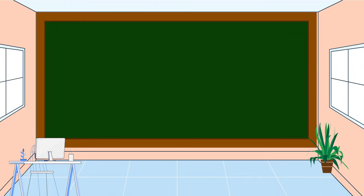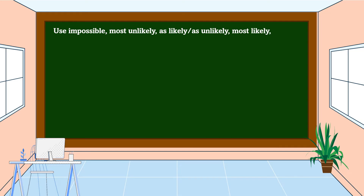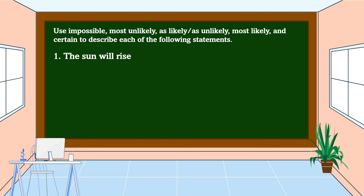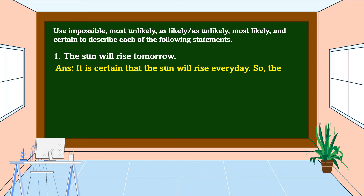Now let's apply what we have learned. Use impossible, most unlikely, as likely as unlikely, most likely, and certain to describe each of the following statements. Number one: the sun will rise tomorrow. The answer is: it is certain that the sun will rise every day, so the probability of the sun rising is 100 percent.